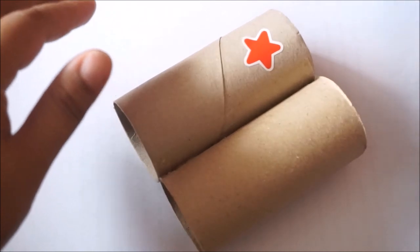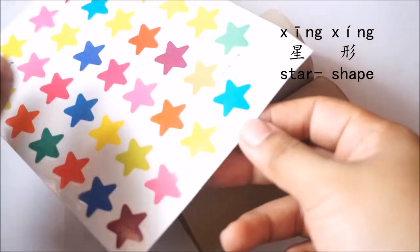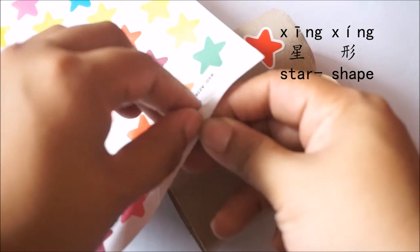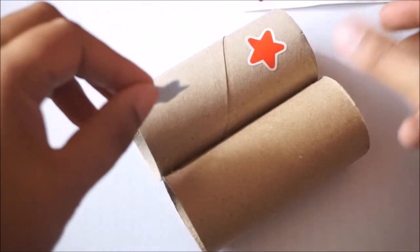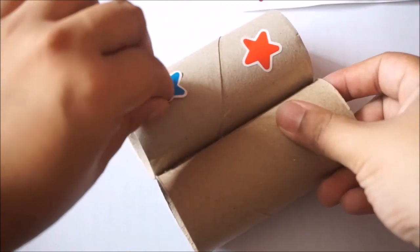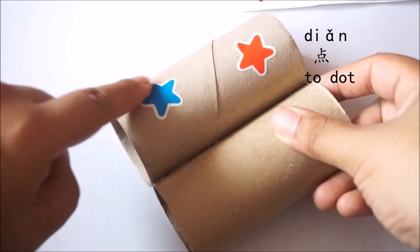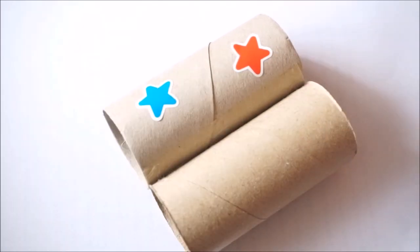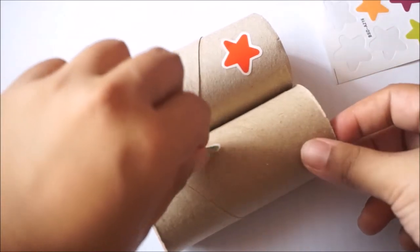Shall we get some more? Do you know what shape is this? This is a star. Let's get one more star, just like this, slowly. And let's stick it on this side. And I can get as much stickers as I want to. Let me put some more. Maybe we can put this one.